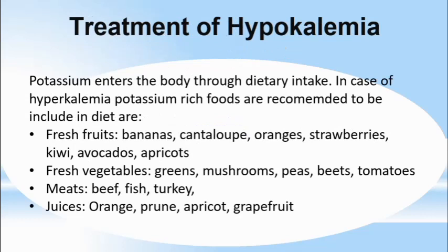Potassium enters the body through dietary intake. For hypokalemia, potassium-rich foods recommended include fresh fruits such as bananas, oranges, strawberries, and kiwi; fresh vegetables including green vegetables, mushrooms, peas, beans, and tomatoes; meats such as beef, fish, or turkey; and juices such as orange, prune, apricot, and grapefruit juice. These are helpful for treating hypokalemia.